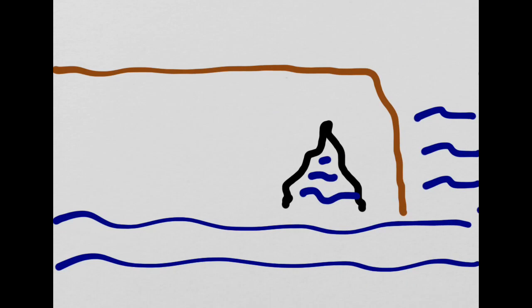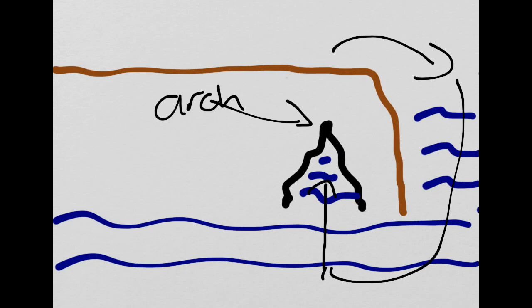So here, this represents an arch. If you were looking at this in real life you would be able to go through the arch, come out the other side of the headland.